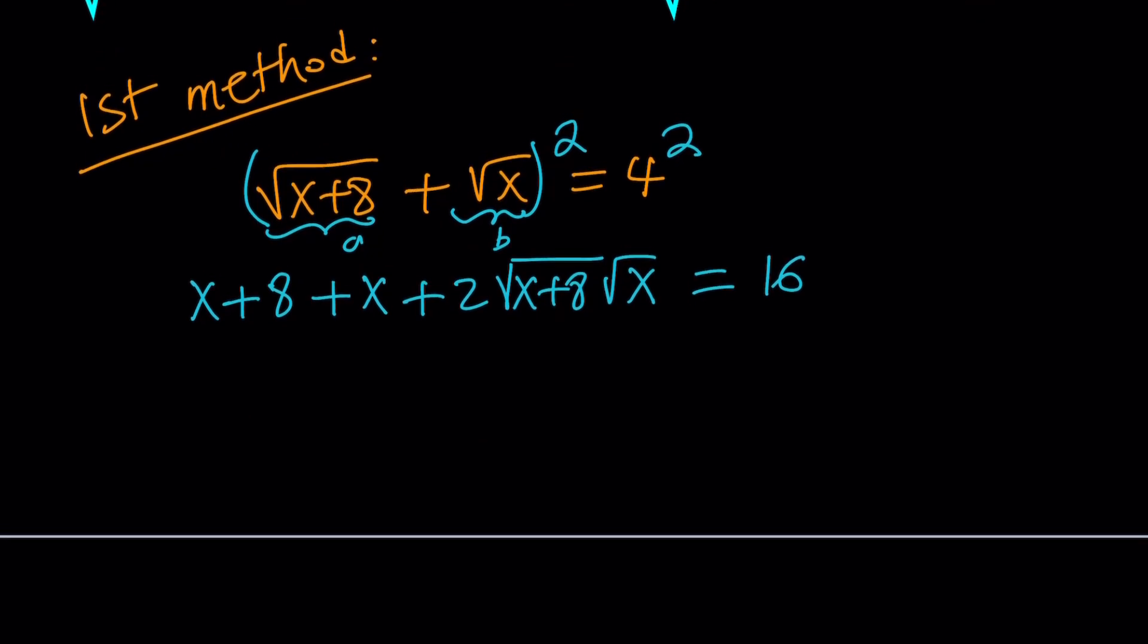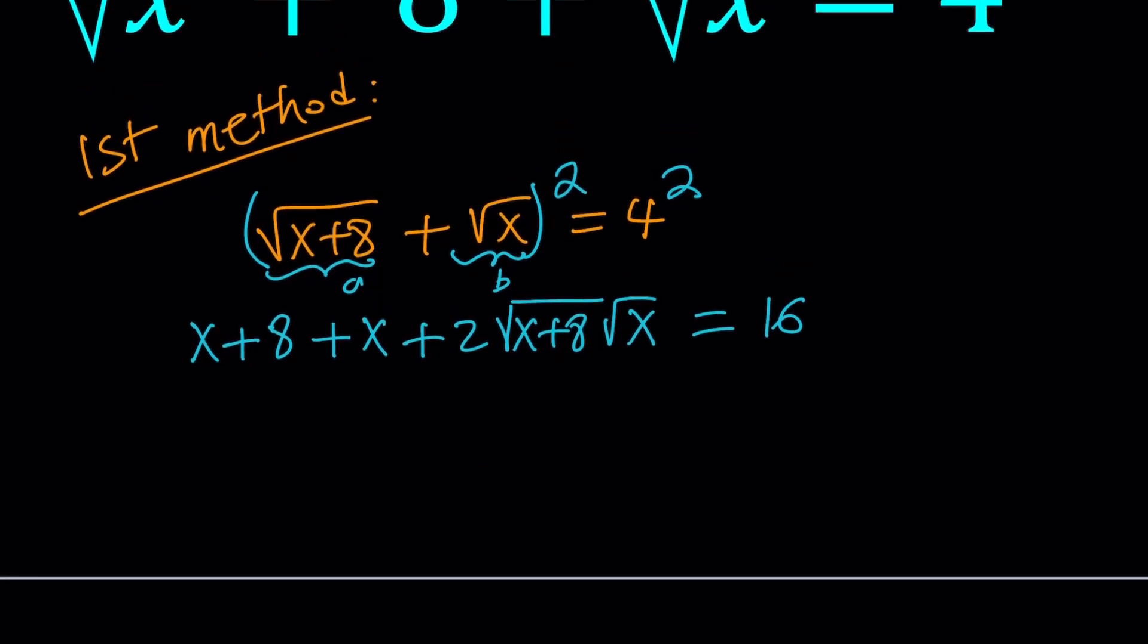Let's go ahead and simplify this further. I can combine like terms. x plus x equals 2x. 2x plus 8 plus 2 times... Now, these two radicals have the same kind of radical. They're both square roots, so we can multiply what's inside. And that's going to give us x squared plus 8x. If you distribute the x over x plus 8, you get this. And then this equals 16.